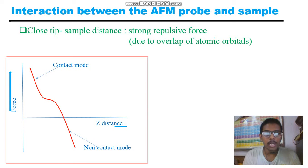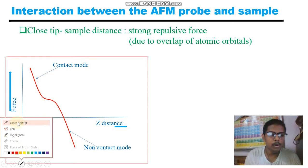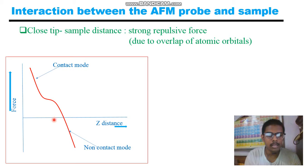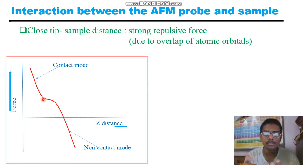Leave the contact mode and non-contact mode for now — we will discuss those in a minute. The key message from this plot is: a very small decrement in z-distance leads to an increment in the force generated. Z-distance decreases, repulsive force increases — that's the main message.